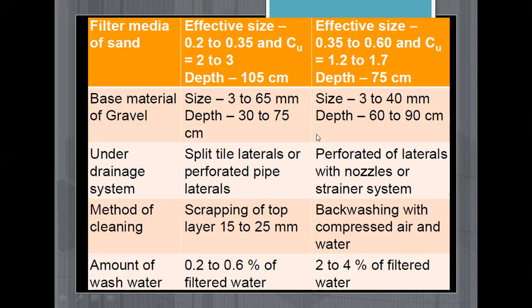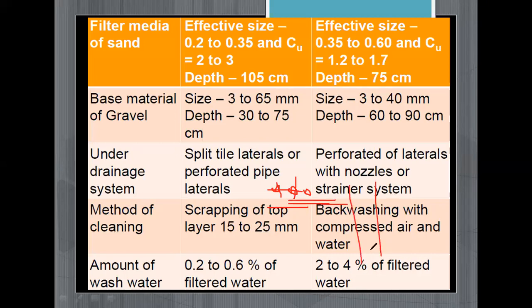The underdrain system in the slow sand filter consists of split tile laterals or perforated pipe laterals. In the rapid sand filter it is perforated laterals with nozzles or a strainer system. Perforated pipes are lateral pipes having openings or holes through which water enters inside the pipe, and these lateral pipes are connected to the main drain or central drain.